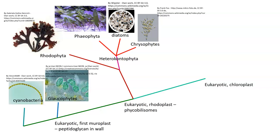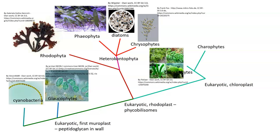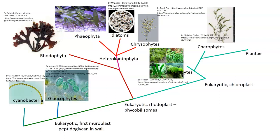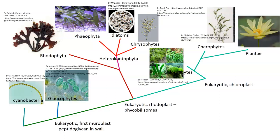There is a branch that goes to the eukaryotic organisms that have actual chloroplasts in them. Out of this we get the chlorophytes, which are the green algae, and the charophytes, which are the stoneworts. These start to look like much more developed material resembling a land plant — something that becomes much more evolved. Out of that grouping we get the Plantae, the higher land plants, shown here with a flower.